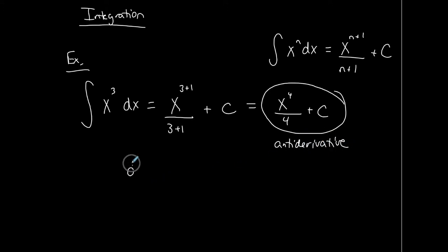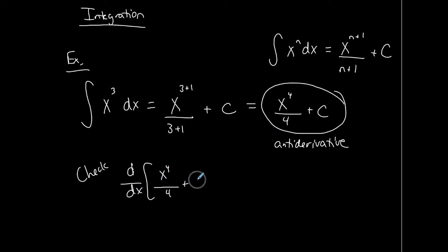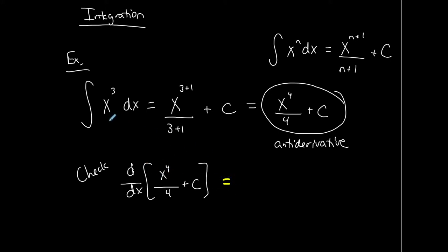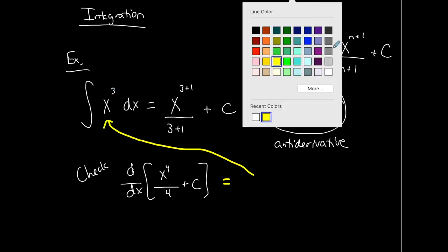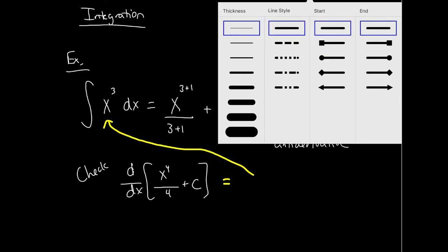Here's my check to see if I integrated properly: if I find the derivative of what I just found as the anti-derivative — x to the fourth over 4 plus c — whatever I get from that derivative should match what I had next to the integral sign originally. That's how I know that I integrated properly.